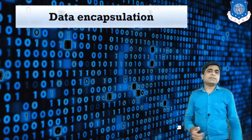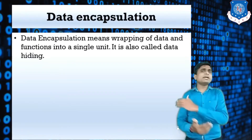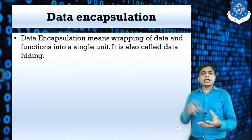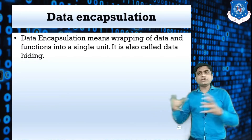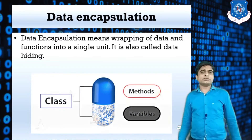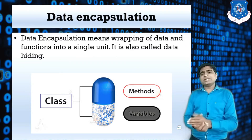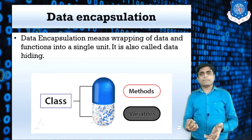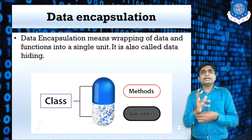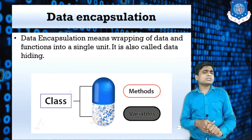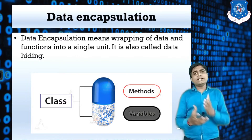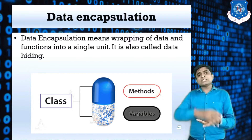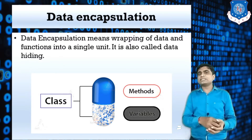Our next concept is data encapsulation. Data encapsulation is nothing but the wrapping of data and functions into a single unit — that is called data encapsulation. It is also known as a class, because a class is a collection of methods and variables. It is also called data hiding, because in a class all data and functions are combined together.